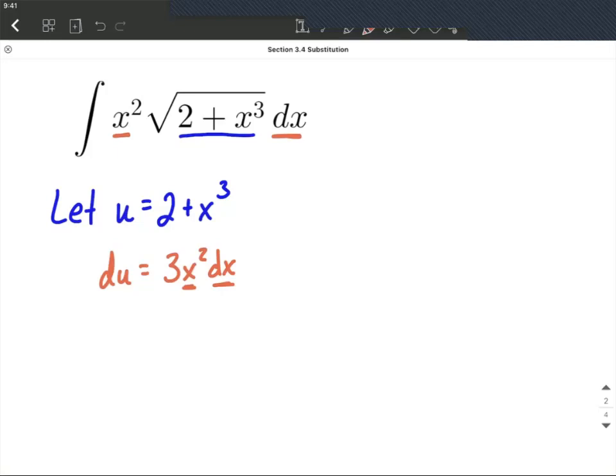So what I'm going to suggest we do is go ahead and move that 3 to the other side of this equation. So I'm going to say one-third, that's moving the 3 to the other side, du is going to equal x squared dx.